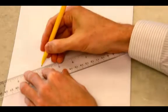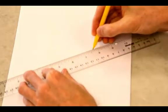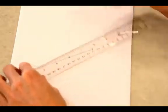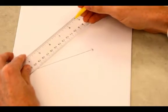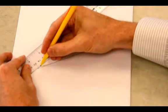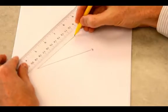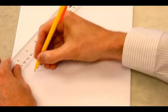I'm going to show you how to construct an angle bisector. First thing I'm going to do is just draw a random angle. Call it angle A.